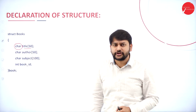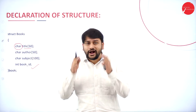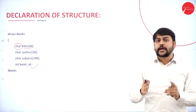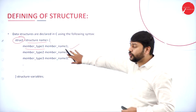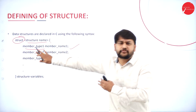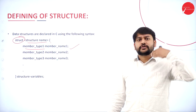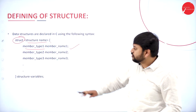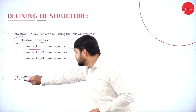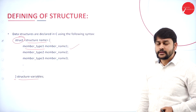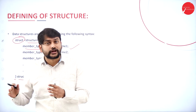One structure can hold multiple data types — for example, int and char together. After mentioning all the variables inside the structure, you close the curly bracket, then write the structure variable name, and end with a semicolon. This is the general syntax to remember when creating any structure.